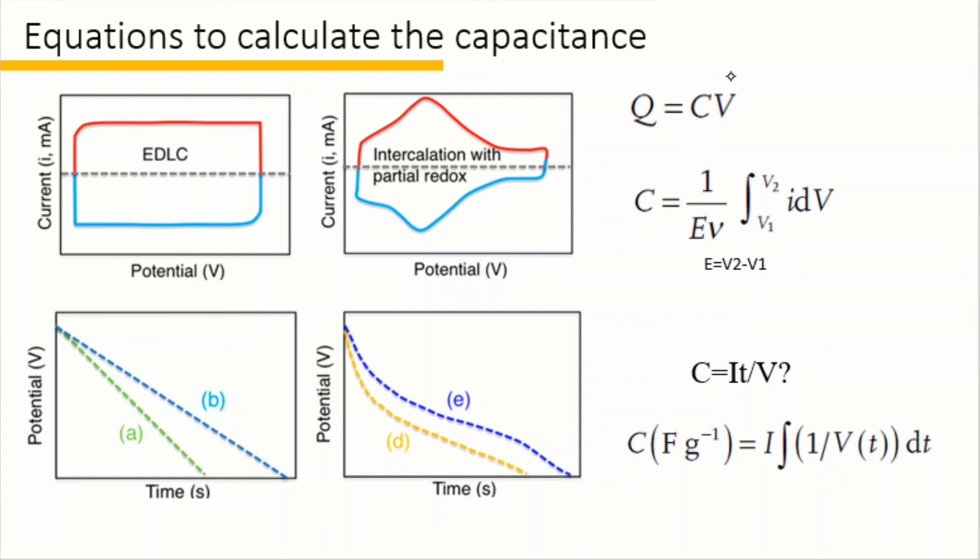When we calculate the capacitance, Q equal to CV is always correct. The capacitance should always equal to the charge over V. It means the capacitance should equal to the overall charge of a single electrode over the potential window of the single electrode.